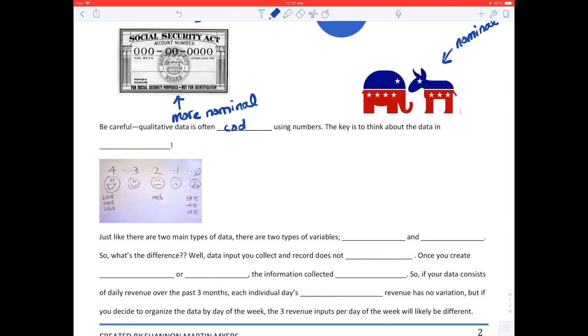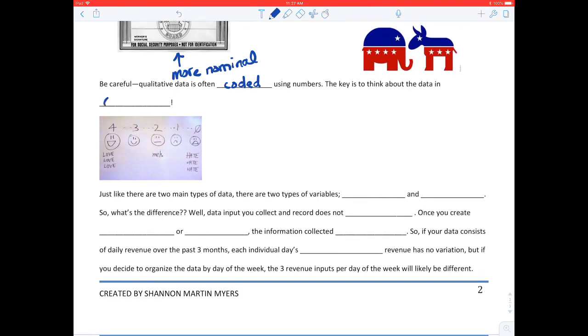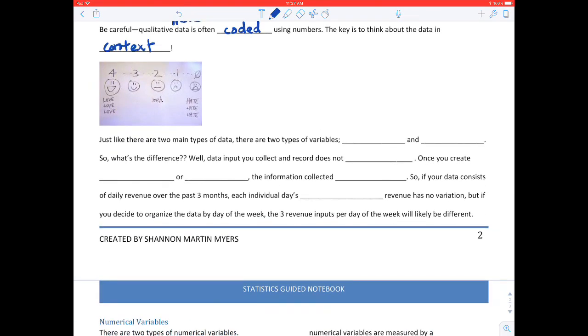Now be careful. Qualitative data is often coded using numbers. The key is to think about the data in context. So you've all, I'm sure, participated in satisfaction surveys after you've been helped by the cable company or someone provided some service to you. Oftentimes you get surveyed, and we statisticians often assign numbers to that data. And once you assign numbers to that data, it's kind of weird because it turns into sort of quantitative data in a sense, although the initial data was qualitative. But once you code it, sorry the dogs are going off, once you code it, you can use quantitative methods to analyze it. So it's actually really kind of cool.